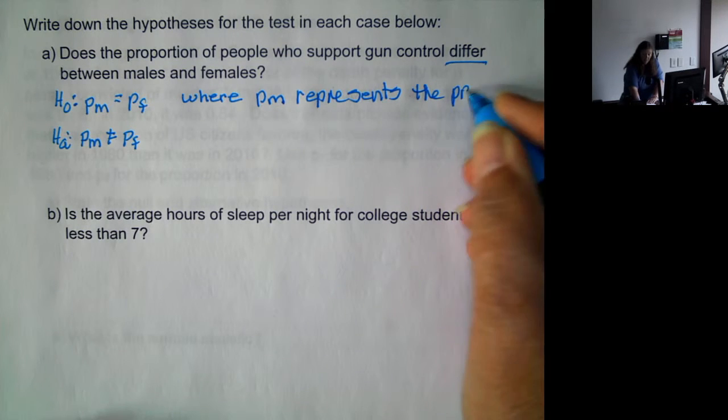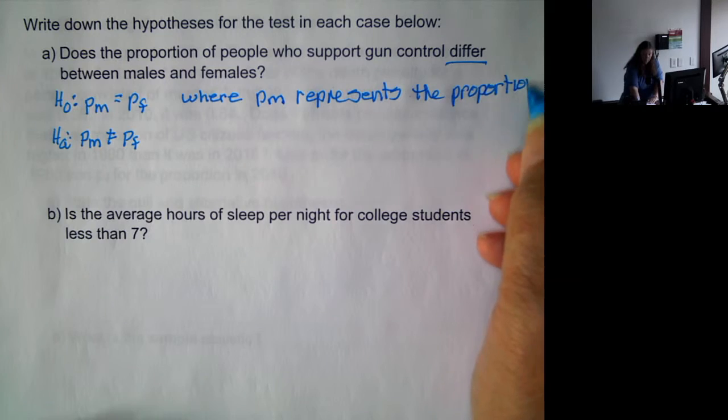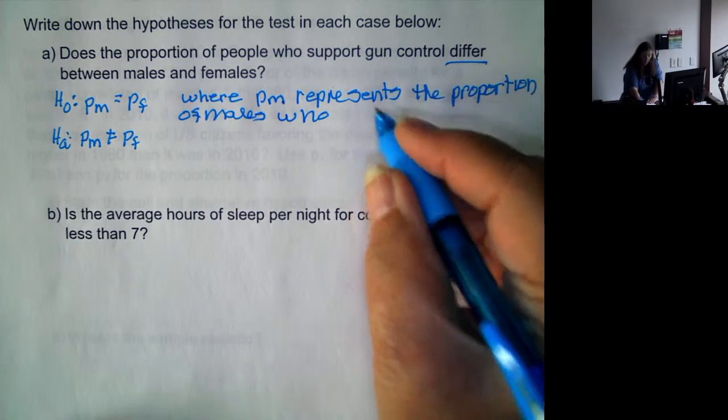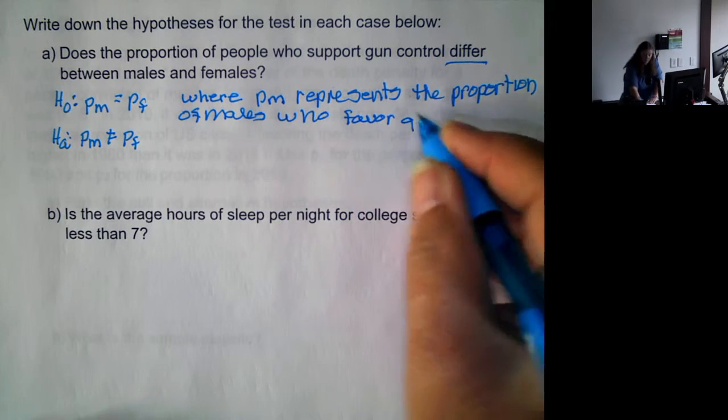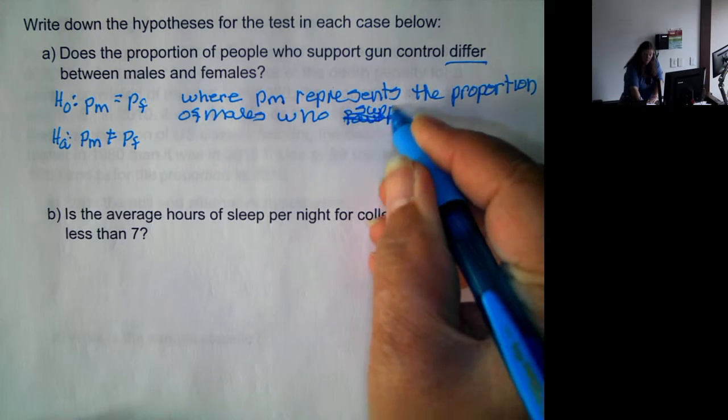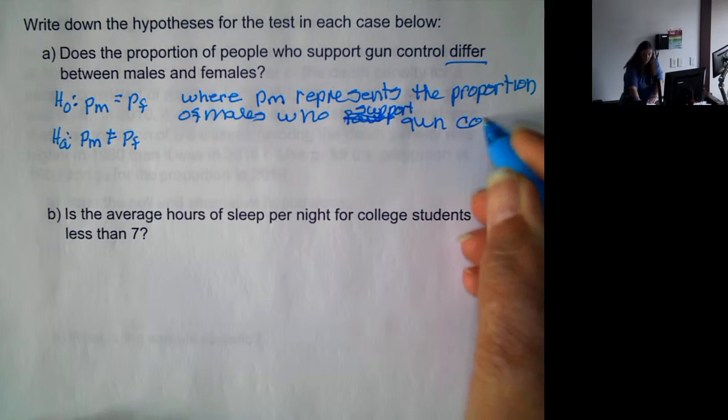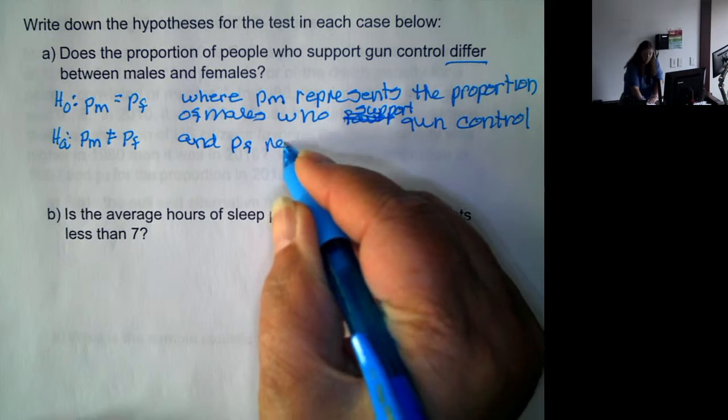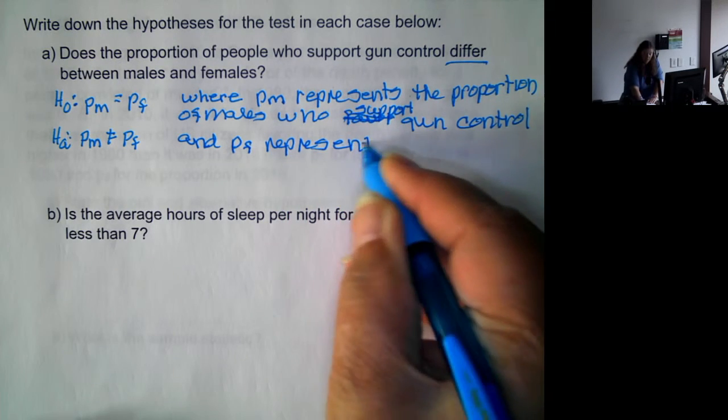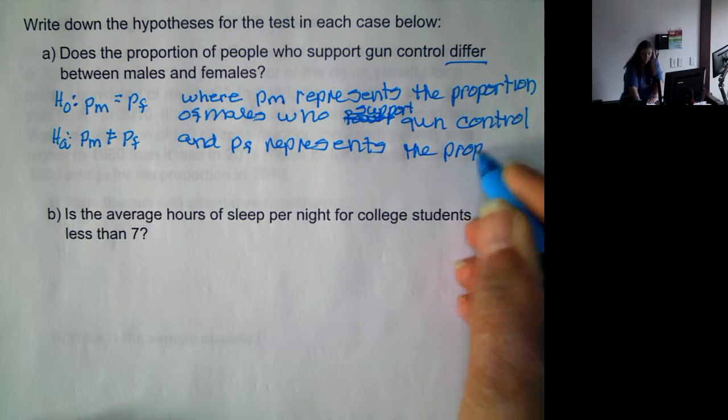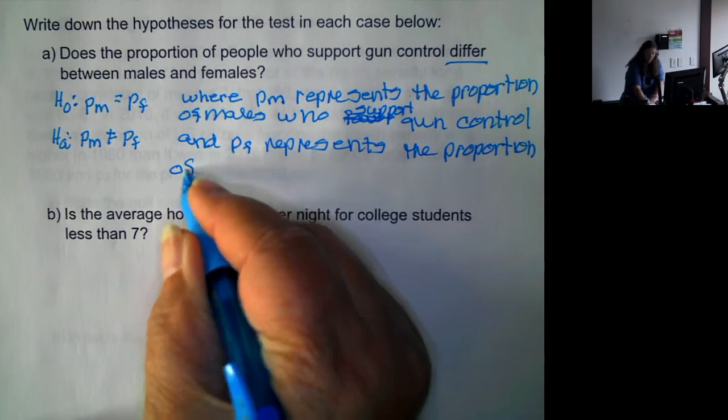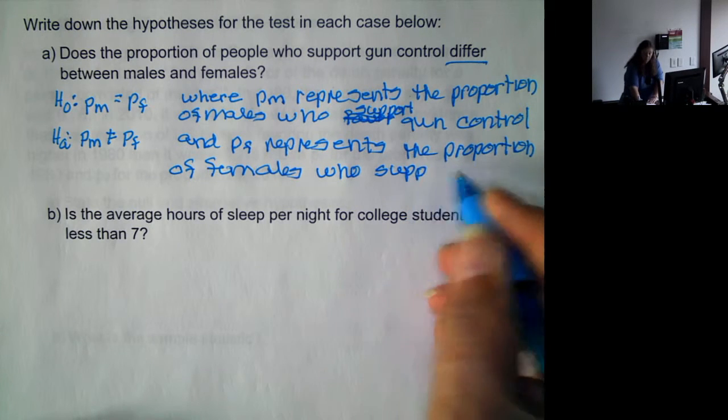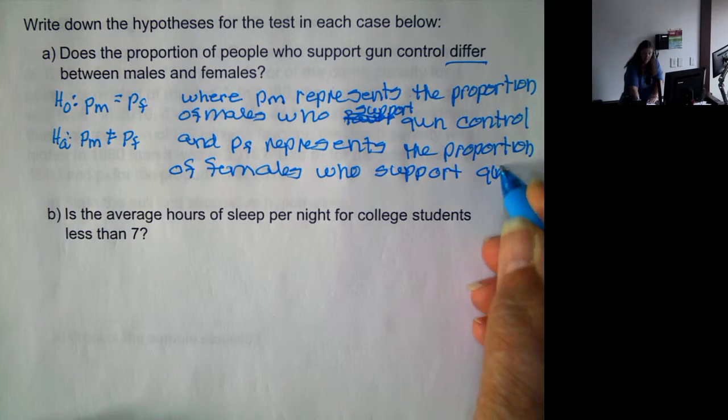The proportion for males who favor or who support gun control. And P_F represents the proportion of females who support gun control.